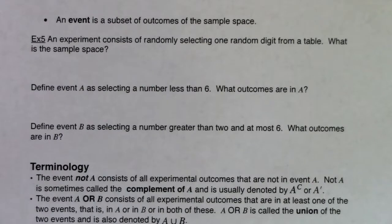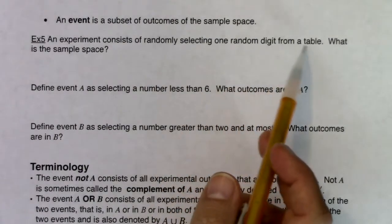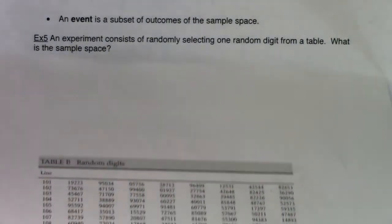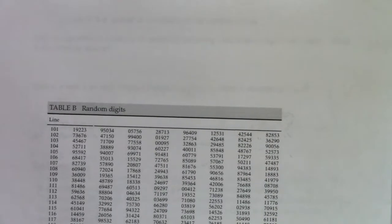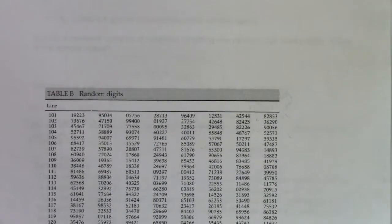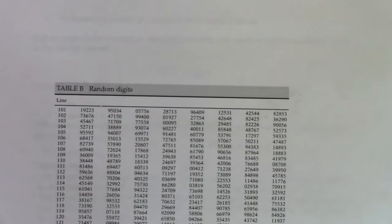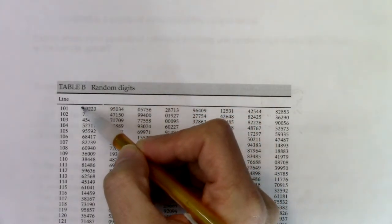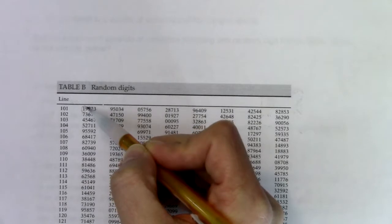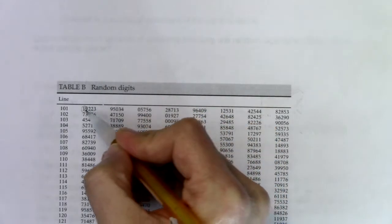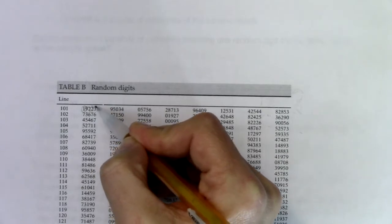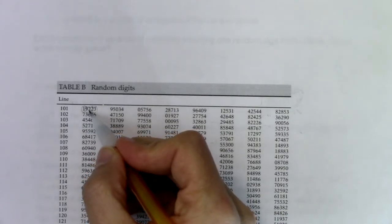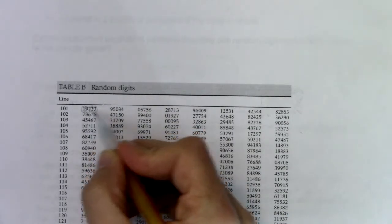An experiment consists of randomly selecting one digit from a digit table. What is the sample space? I'm going to pop back into that random digit table from chapter one, where we were taking random digits. If I take any one digit off this table, starting with line 101, I got a one, then a nine, then a two, then a two, then a three — taking one digit at a time. These are the actual outcomes from line 101.